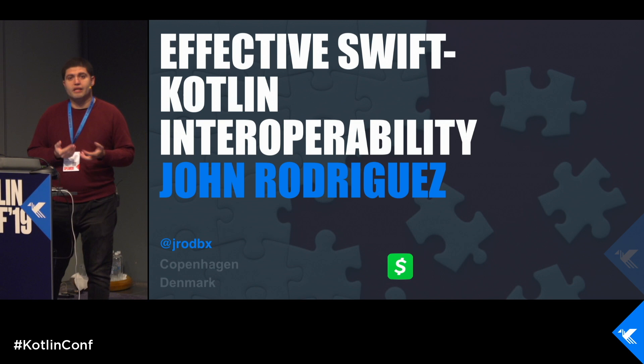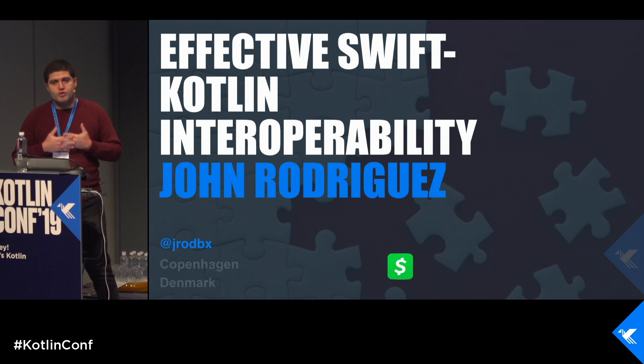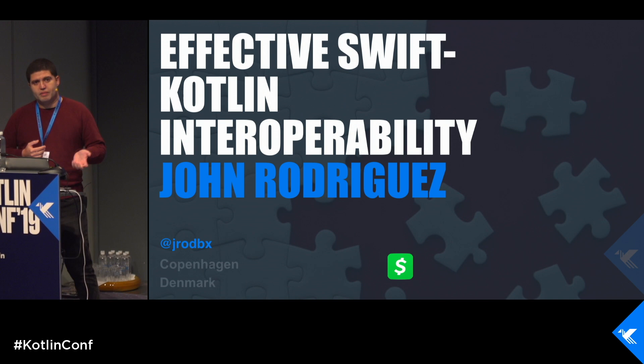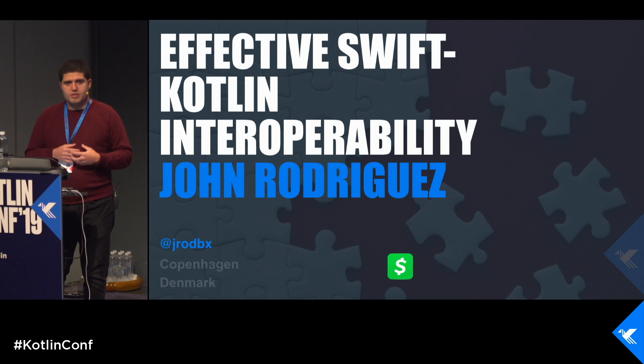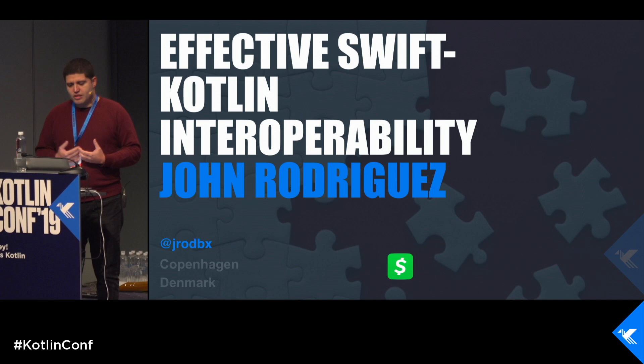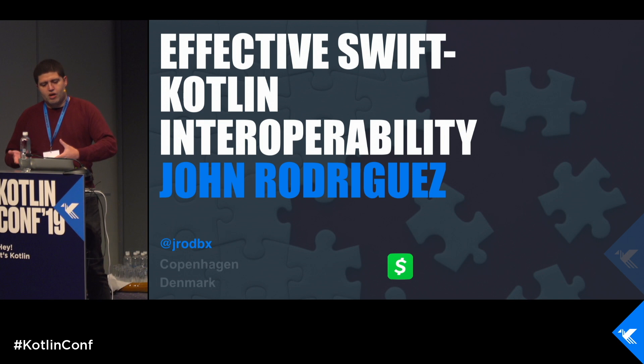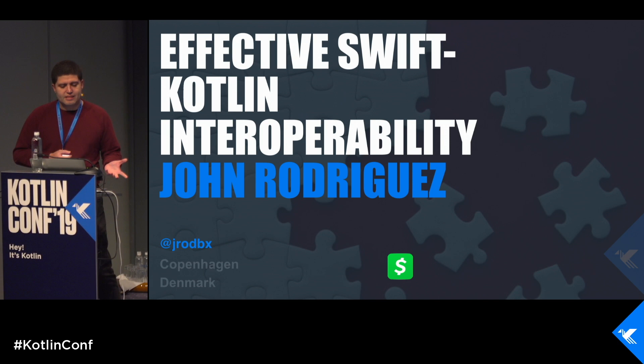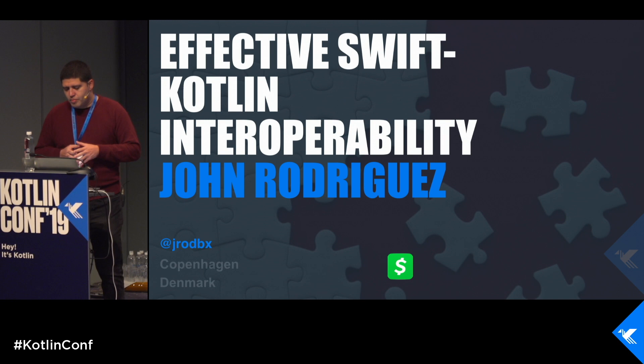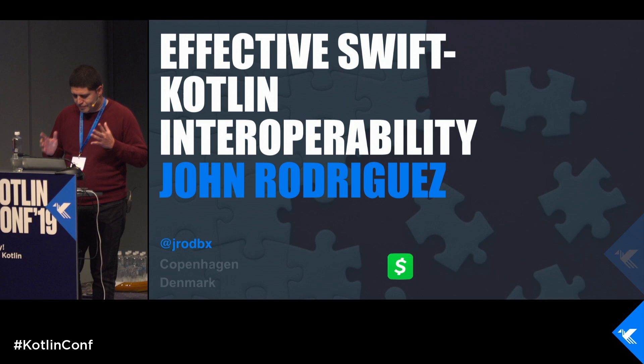Some context: if you saw Alex Strong and Ben Asher's talk on how multi-platform is being used in their respective apps, you'll know that we already have some multi-platform usage in Cash App. We're looking for additional ways to continue moving that. In this talk, I want to share my experiences so far, provide some early insights, things to be mindful of, and maybe provide some advice. But this is still a work in progress, so feel free to draw your own conclusions.